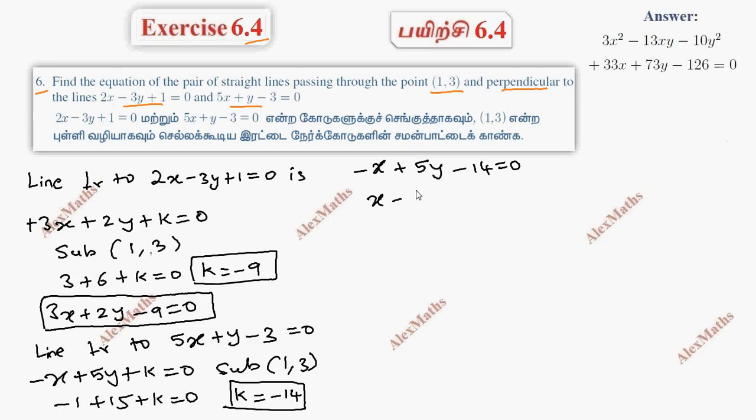Since the first term is negative, we can change all signs to get the same equation. Now for the combined equation, this is equation 1 and this is equation 2.